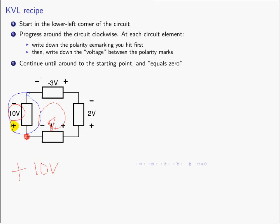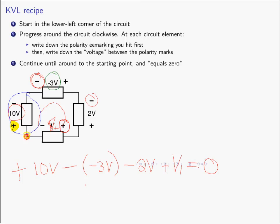And then you write down whatever the voltage is between the polarity markings — in this case, 10 volts. Go to the next circuit element. What polarity marking do I hit first? It's a minus sign. And then you write down whatever is the voltage between the polarity markings — minus 3 volts. Continuing on, the next polarity marking is a minus sign, and then it's positive 2 volts. And then the next marking is a plus sign, and what is contained between the polarity markings is V1. At that point I've continued around until I have reached the starting point again, and KVL says the sum of these voltages around a closed path must equal zero.